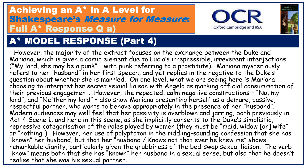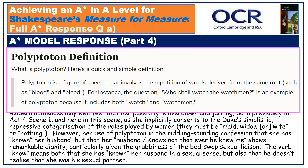Modern audiences may well feel that her passivity is overblown and jarring, both previously in Act 4, Scene 1, and here in this scene, as she implicitly consents to the Duke's simplistic, repressive categorisation of the roles played by women: 'They must be maid, widow or wife or nothing.' However, her use of polyptoton in the riddling-sounding confession that she has 'known her husband, but that her husband knows not that ever he knew me' shows remarkable dignity, particularly given the grubbiness of the bed-swap sexual liaison. The verb 'know' means both that she has known her husband in a sexual sense, but also that he doesn't realise that she was his sexual partner.